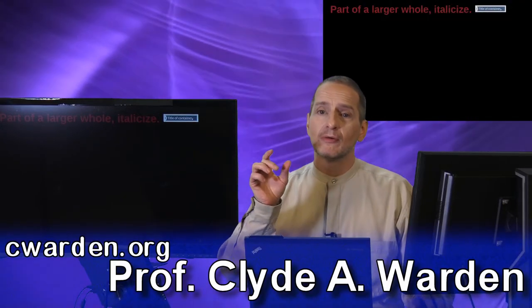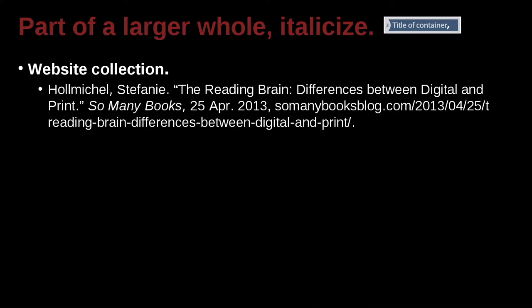Continuing on with this idea of being a smaller part of something bigger. Let's look at an example of a website post that's actually one bit rather than the whole blog or the whole website. We have Homeichael, comma, Stephanie — so Stephanie is the first name, Homeichael is the last name, the surname, family name. We have quotation marks here, so this tells us it's something smaller inside a bigger container: 'The Reading Brain: Differences Between Digital and Print.' And this is inside the website or blog, So Many Books. This was posted on 25 April 2013.